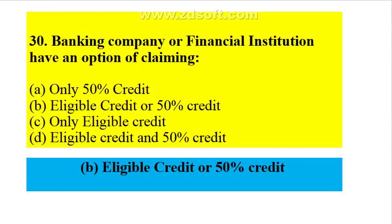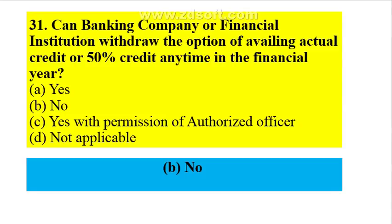A banking company or financial institution has an option of claiming eligible credit or 50% credit. Can a banking company or financial institution withdraw the option of availing actual credit or 50% credit any time in the financial year? No, they cannot withdraw the option at any time during the financial year.